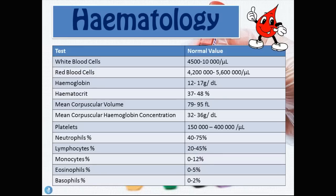We have neutrophils which make up 40 to 75 percent of all white blood cells, lymphocytes which make up 20 to 45 percent, monocytes which make up 0 to 12 percent, eosinophils which make up 0 to 5 percent, and finally basophils which make up 0 to 2 percent of all white blood cells.